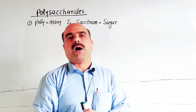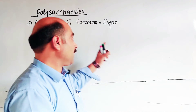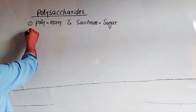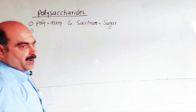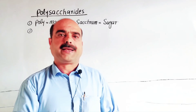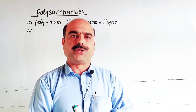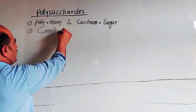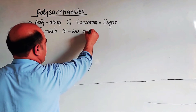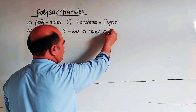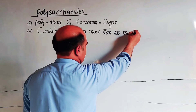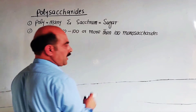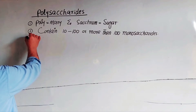So 'polysaccharides' means many sugar units combined together. When many monosaccharides combine, they form polysaccharides. They consist of a type of carbohydrates which contain 10 to 100 or more than 100 monosaccharide units and are called polysaccharides. Monosaccharides are simple sugar units.